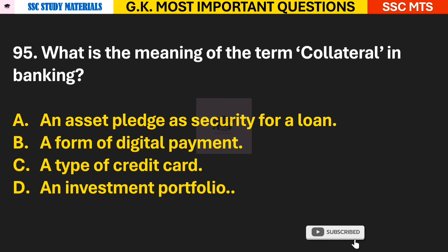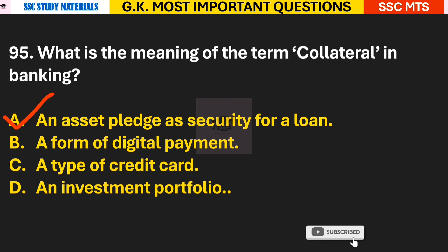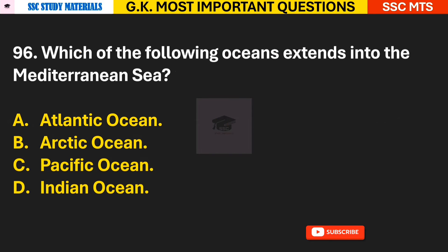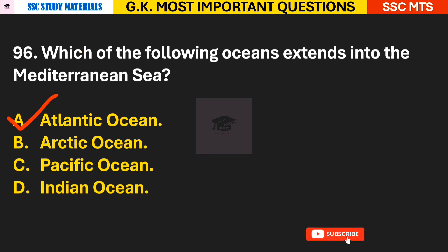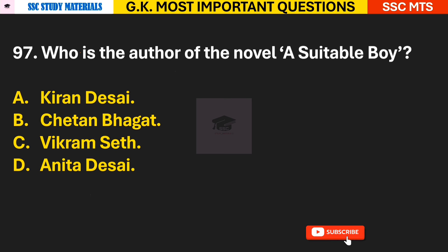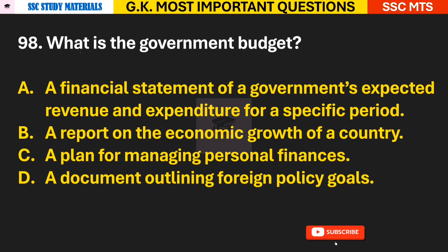Question 95: What is the meaning of the term 'collateral' in banking? Answer A — an asset pledged as security for a loan. Question 96: Which of the following oceans extends into the Mediterranean Sea? Answer A — the Atlantic Ocean. Question 97: Who is the author of the novel 'A Suitable Boy'? Answer C — Vikram Seth.